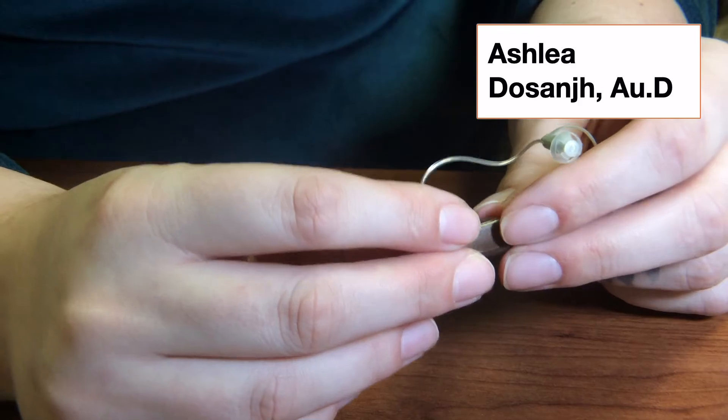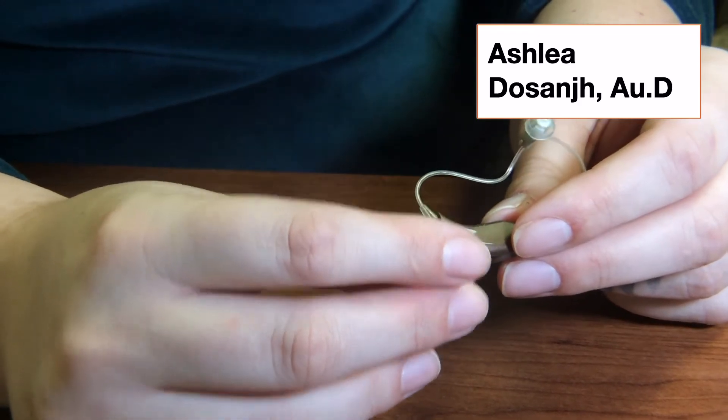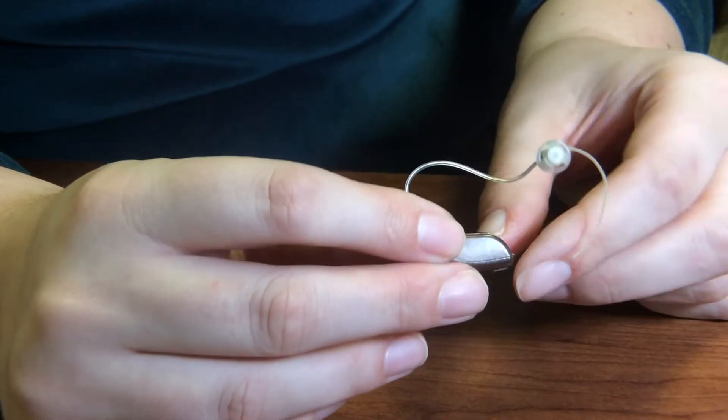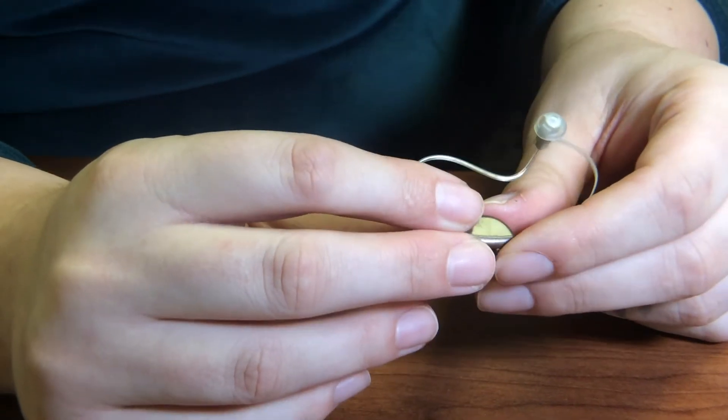This is Ashlea Dosanjh. I'm an audiologist and we are looking at a RIC hearing aid with a battery door. RIC stands for receiver in the canal.